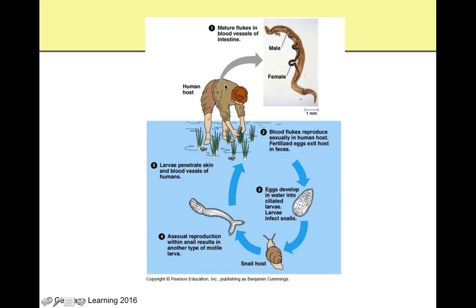Here's how it works: you've got a blood fluke — male and female — in someone's intestine. They undergo sexual reproduction in the human host and have fertilized eggs that drop out in the host feces. This person needs to go to the bathroom near the river, close enough that the next hard rainstorm washes all those zygotes down into the river. So all these brand new blood fluke babies are in the river, and they develop into ciliated larvae that swim around. But they're not going to become a polyp like jellyfish — they're going to infect a snail.